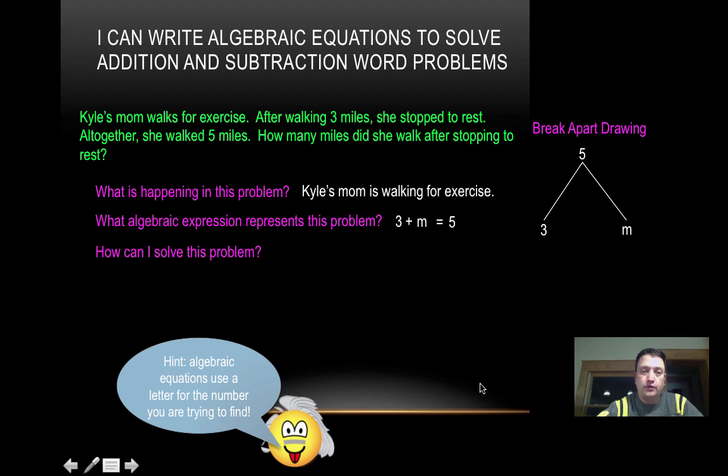So how can I solve this problem? Well, this is a pretty easy mental math problem. I know that three plus two equals five. So therefore, M would be equal to two. So Kyle's mom walked two miles after she rested would be the answer to this problem.